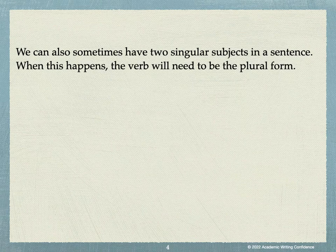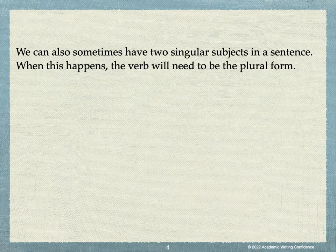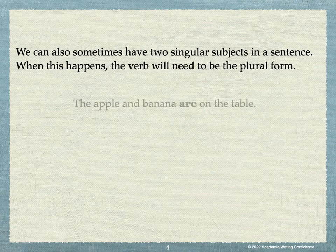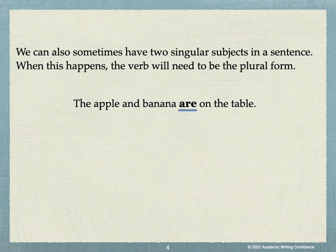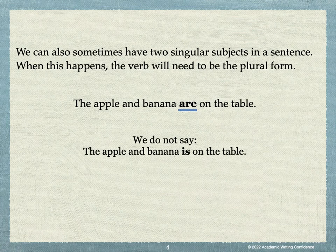We can also sometimes have two singular subjects in a sentence, and when this happens, the verb will need to be the plural form. So in the example, the apple and banana are on the table, we have two singular subjects but we need to use the plural form, are. We do not say, the apple and banana is on the table.